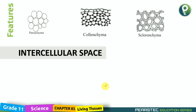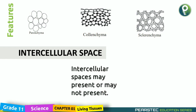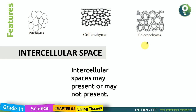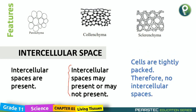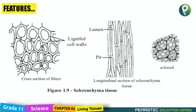Another feature is intercellular space. In Parenchyma, intercellular spaces are present. In Collenchyma, intercellular spaces may or may not be present. In Sclerenchyma, cells are tightly packed, and therefore there are no intercellular spaces. So unlike Parenchyma which definitely has intercellular spaces, and Collenchyma which may or may not, Sclerenchyma has none.